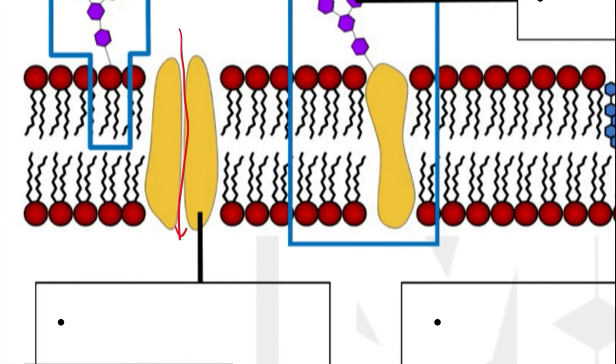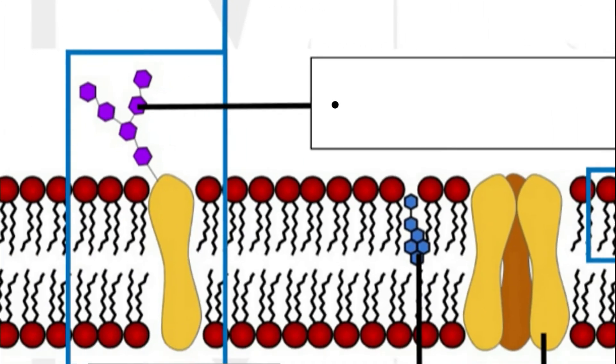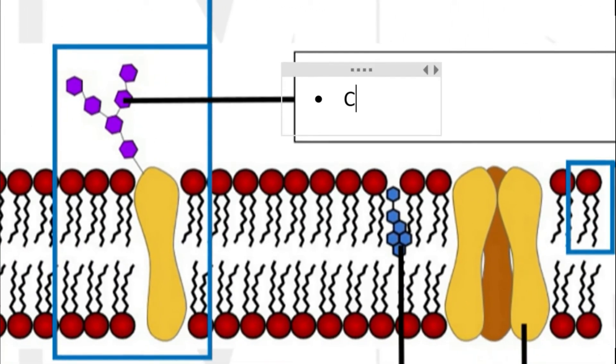Within the phospholipid bilayer, we can see several components. Let's start with this purple substance. This is carbohydrate.